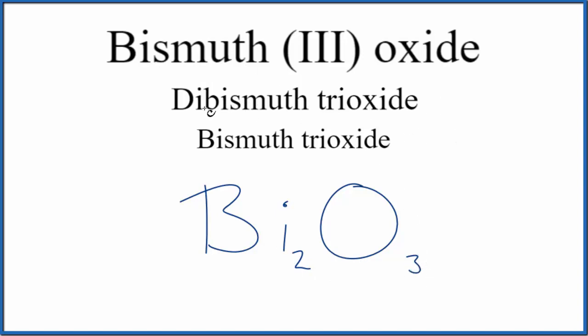You can see in this name here, dibismuth trioxide di, that means 2. So we have our 2 bismuth atoms here and then trioxide 3 oxygens. So we have that there as well. So this name also works to describe the compound.